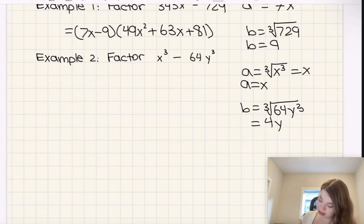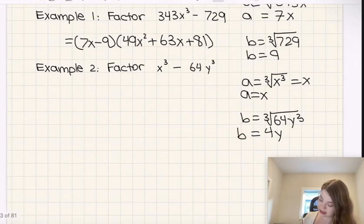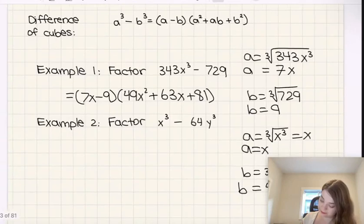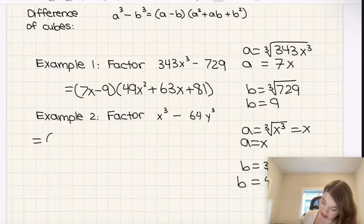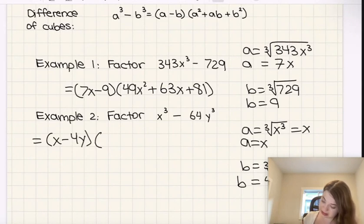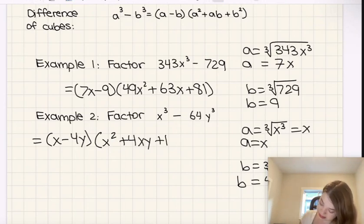So then we just need to sub in a is equal to x, and b is equal to 4y. So for this one, we're going to get x minus 4y times, a squared, which is going to be x squared, ab, which is going to be x times 4y, so plus 4xy. And then plus b squared, which is going to be 4y squared, so that's 16y squared, like that.